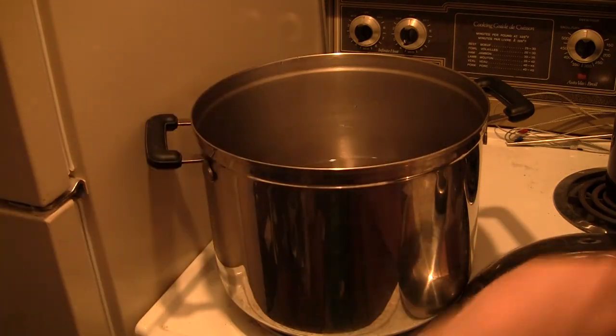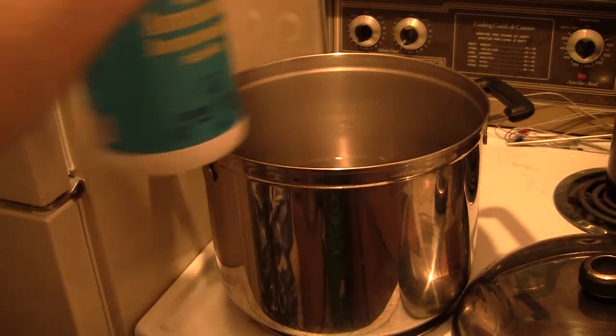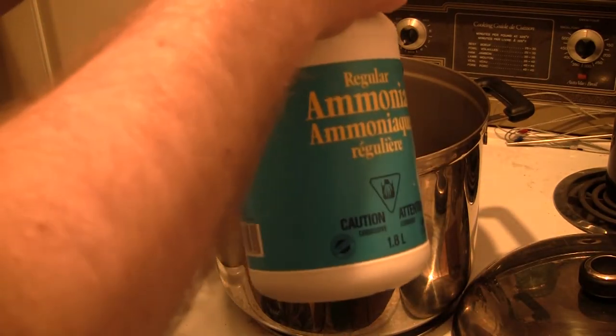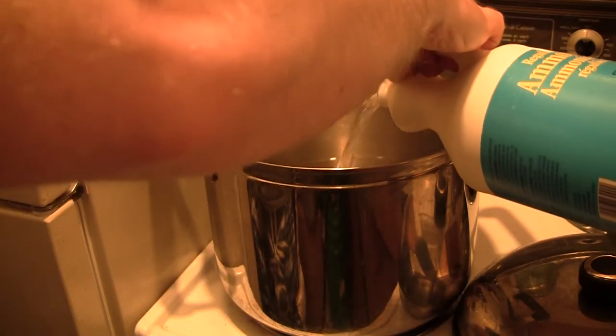With the largest stainless steel pot I could find, I brought some water to the boil, and then I added a good splash of ammonia. The ammonia helps the steam penetrate into the wood, making it softer and easier to bend.